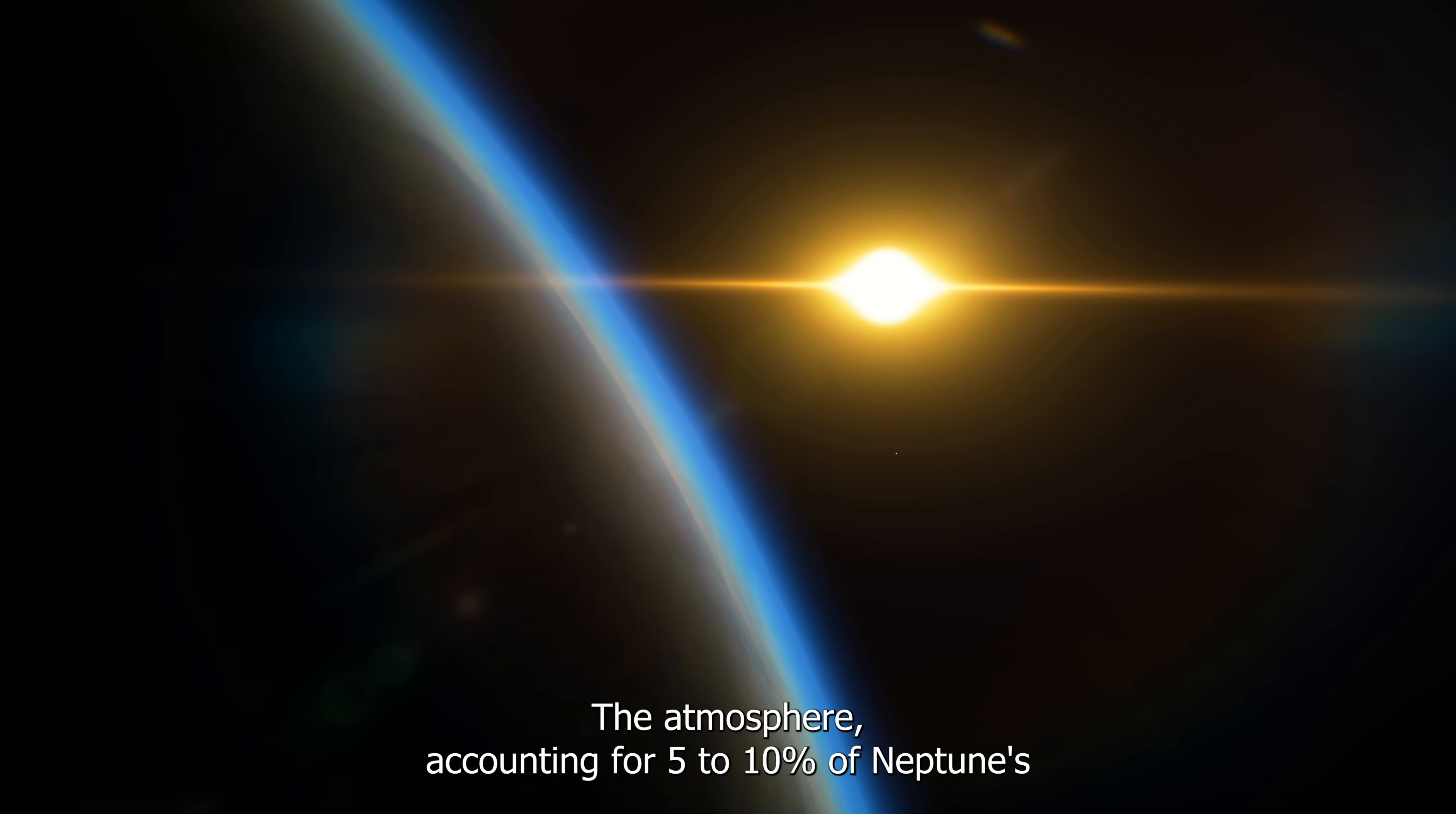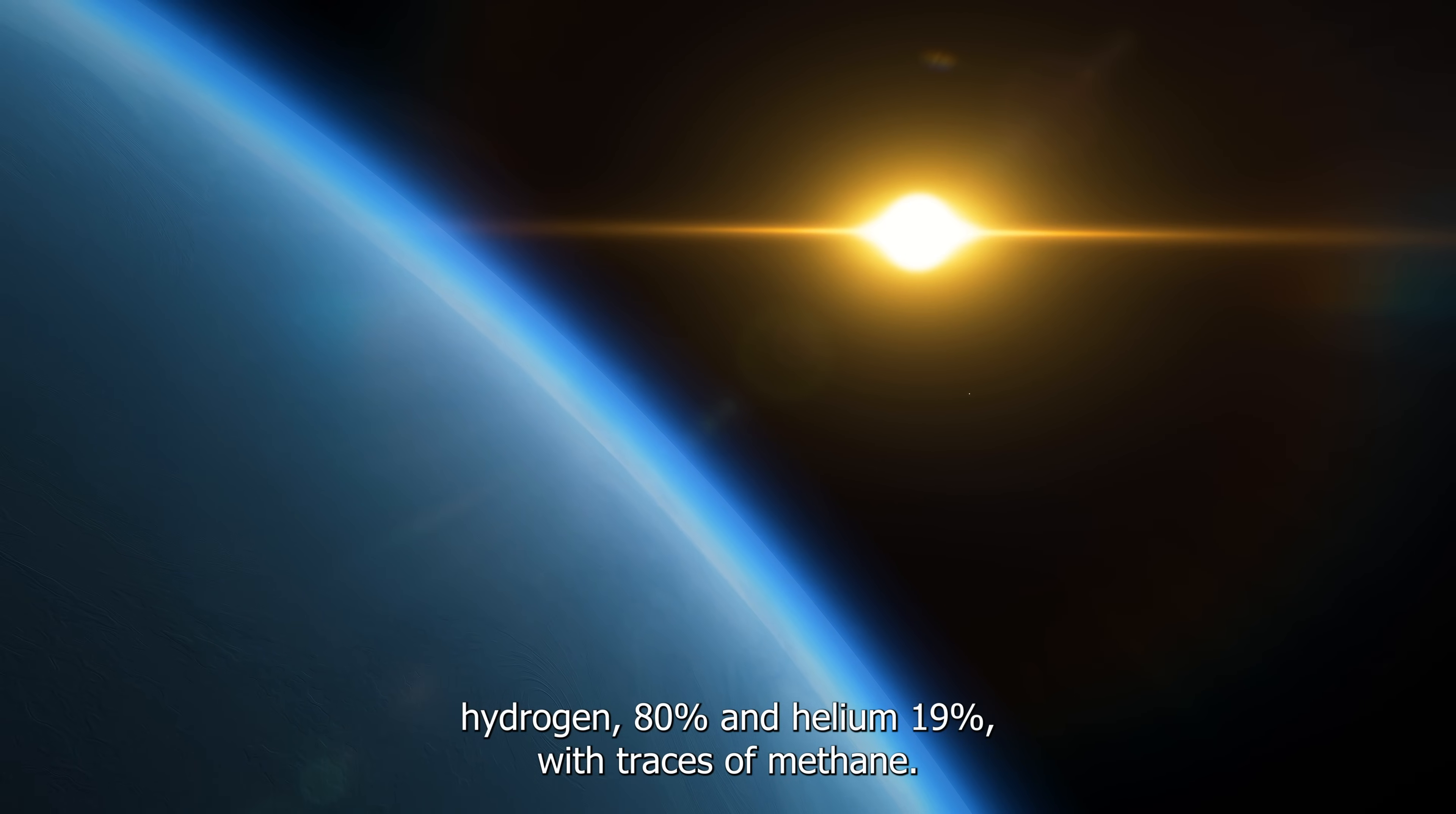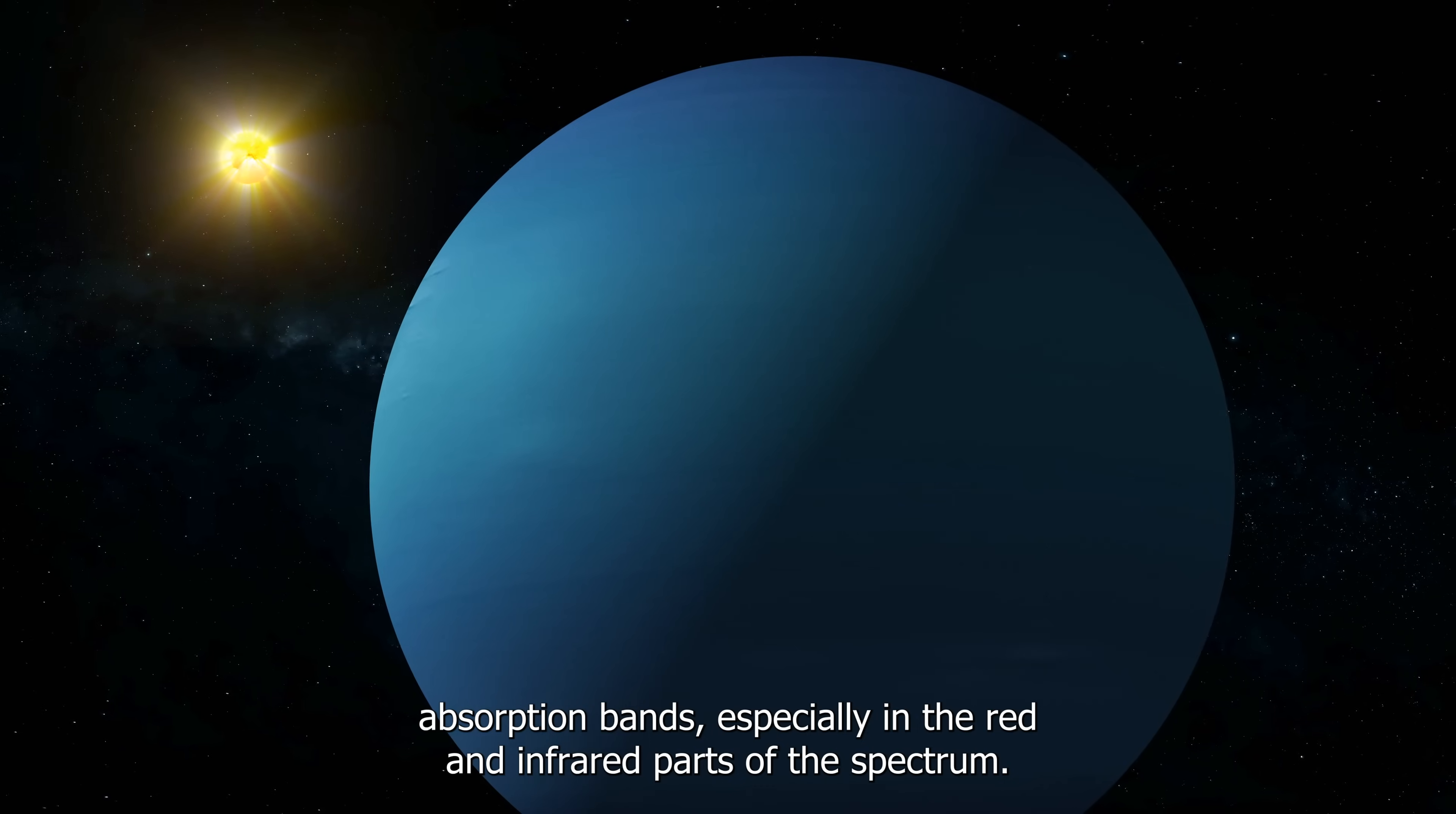The atmosphere, accounting for 5 to 10 percent of Neptune's mass, is primarily composed of methane, ammonia, and water. As we ascend to higher altitudes, the atmosphere becomes predominantly hydrogen, 80 percent, and helium, 19 percent, with traces of methane. The distinctive blue hue surrounding Neptune is attributed to methane's absorption bands, especially in the red and infrared parts of the spectrum.